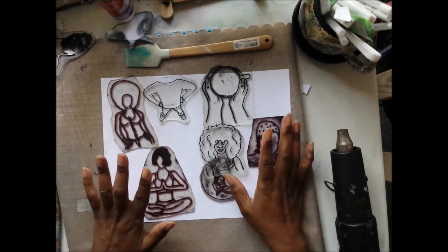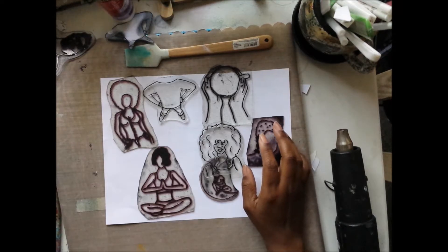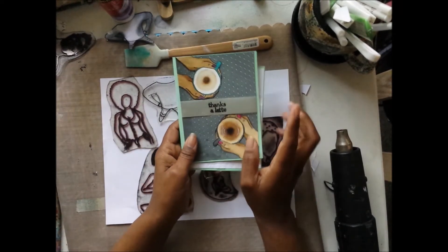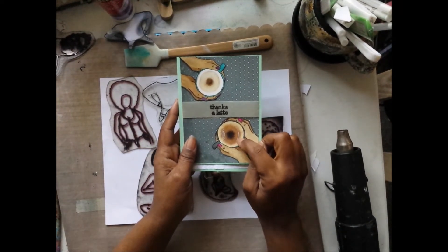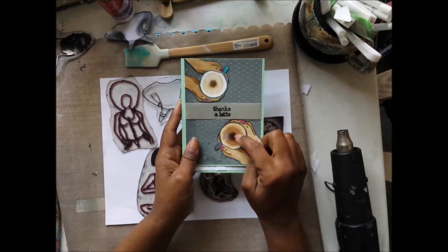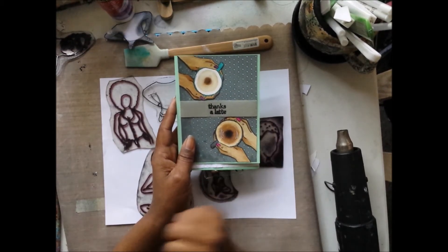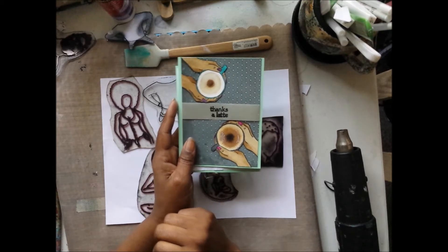So anyway, I hope you like the stamps. I hope you go to the Etsy shop and check them out. Check out the other ones that are out there. And also, if you wanted to see a video on how to get your stamped images into the computer and then cut them with your Cricut Explorer, let me know and I'll definitely do that. So thanks for checking in. Bye-bye.